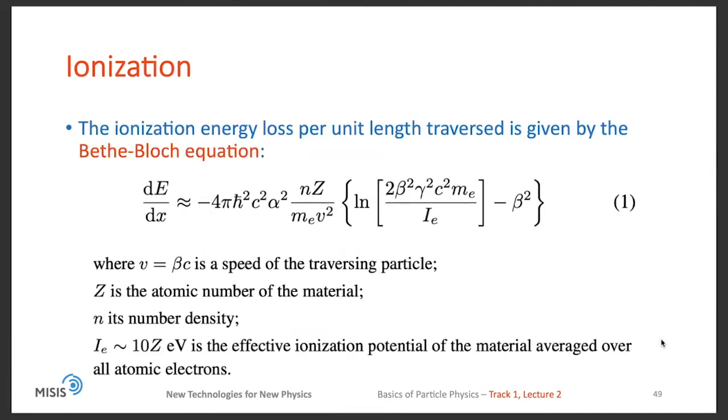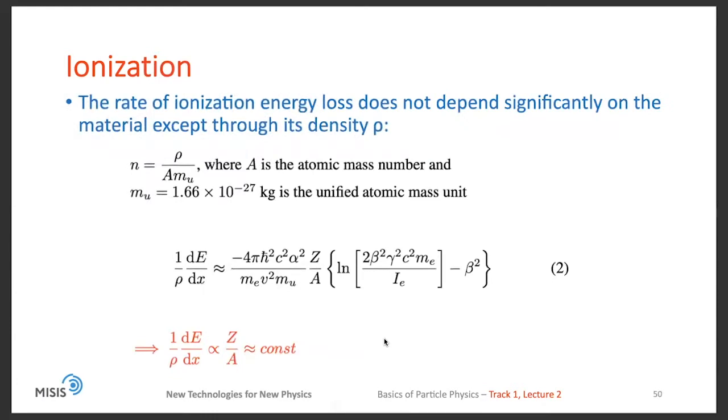The ionization energy loss per unit length traversed is given by Bethe-Bloch equation, which you will see several more times during this course. The components in this equation are: v is the speed of the traversing particle, Z is the atomic number of the material, n its number density, and IE is the effective ionization potential of the material averaged over all atomic electrons. The rate of ionization loss does not depend significantly on the material, except through its density rho. You can see that 1 over rho dE/dx is proportional to Z over A, and the proportionality is a constant.